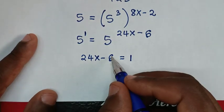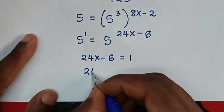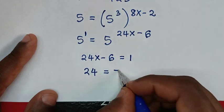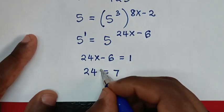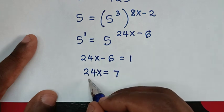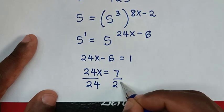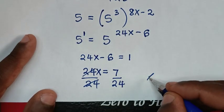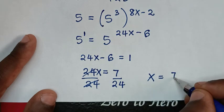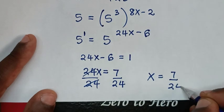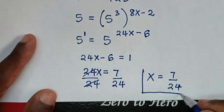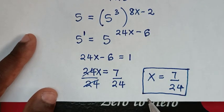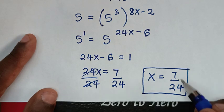Taking −6 to the other side gives 24x = 1 + 6 = 7. Dividing both sides by 24, x = 7/24. Therefore this is the final answer for the value of x.